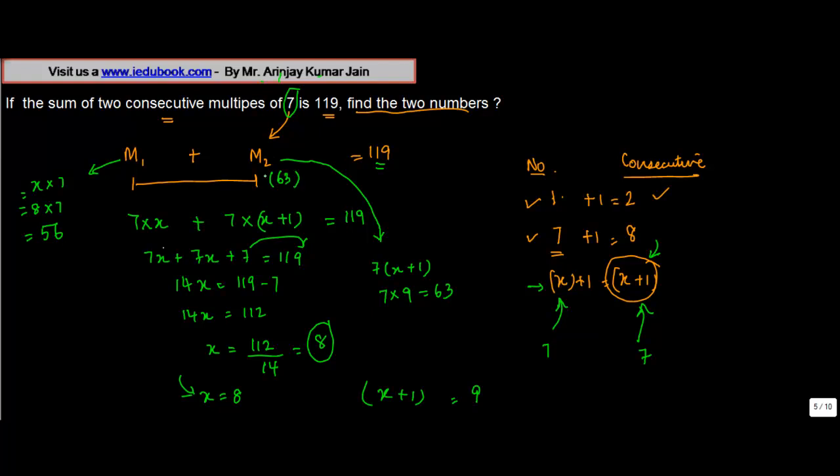We have M2 equals 63, M1 equals 56. If you add the two of them, we get 119, which is actually what we were told.